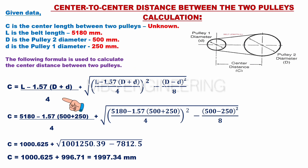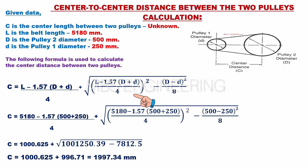C equals L minus 1.57 multiplied by capital D plus small d, and the obtained value divided by 4, plus the square root of L minus 1.57 multiplied by capital D plus small d, and the obtained value divided by 4, and the further obtained value whole squared, minus capital D minus small d, and that obtained value whole squared, further divided by 8.